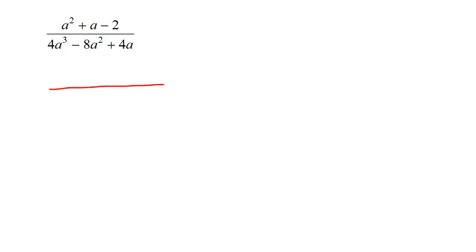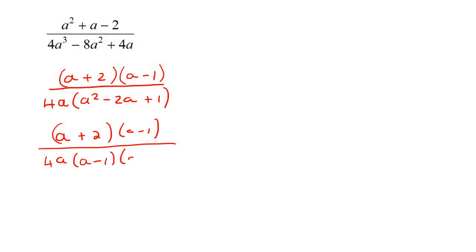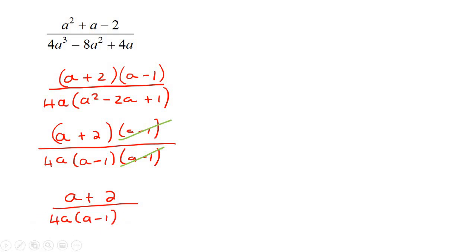At the top we have a trinomial, which factors into (a + 2)(a − 1). At the bottom, take out a common factor of 4a, leaving 4a(a² − 2a + 1). That quadratic factorizes further as (a − 1)(a − 1). The (a − 1) factors cancel, leaving the final answer as (a + 2) over 4a(a − 1). Typically, teachers want the bottom left in factorized form and the top multiplied out if possible.